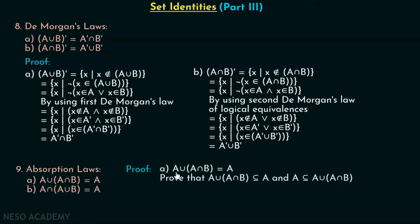We will try to prove this in a different way: prove that A union A intersection B is a subset of A, and A is a subset of A union A intersection B. If both of these are true, then A union A intersection B is equal to A. First, we will prove that A union A intersection B is a subset of A.